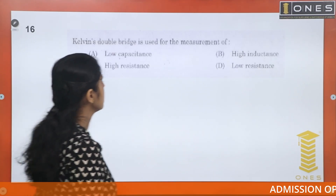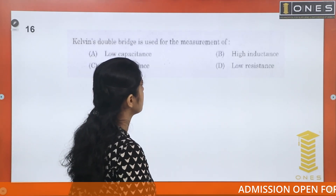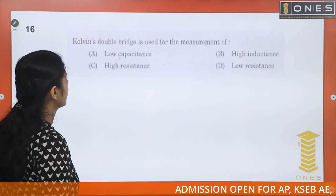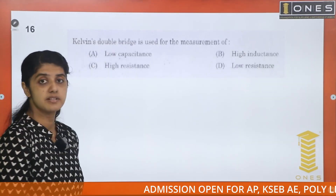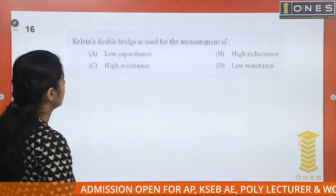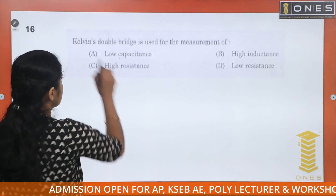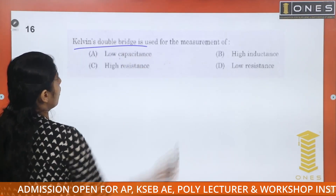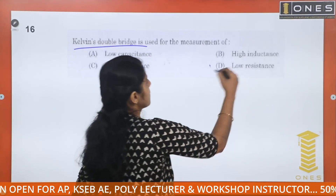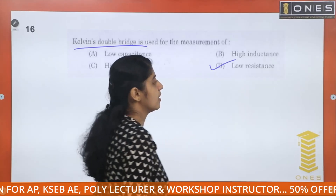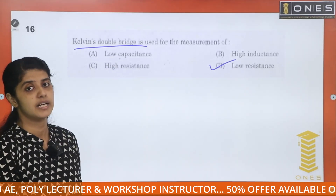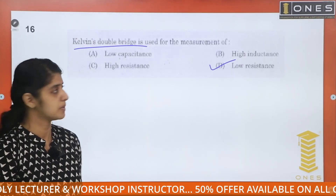Kelvin's double bridge is used for the measurement of low resistance. Kelvin's double bridge is used for low resistance measurement. Low resistance measurement uses the Kelvin's double bridge.